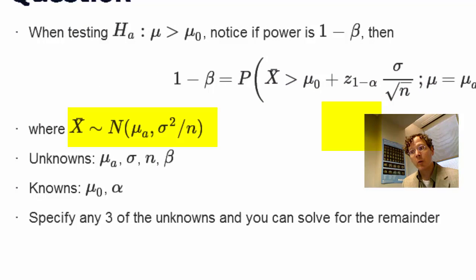And then I simply reiterate that point here on the next line, where I'm explicitly stating that X bar is normal with mean mu a and variance sigma squared over n.